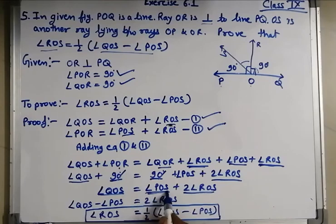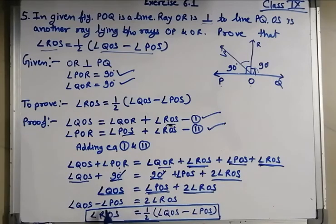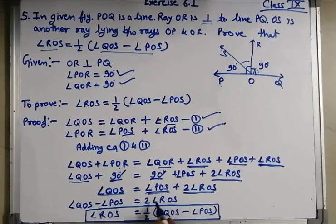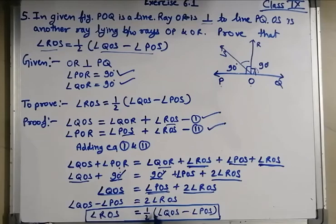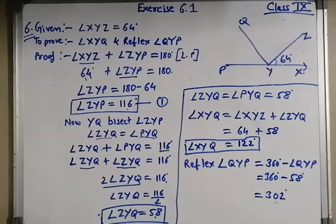So QOS minus POS equals 2 angle ROS. Dividing both sides by 2: angle ROS is equal to one upon two of (angle QOS minus angle POS). Hence proved.